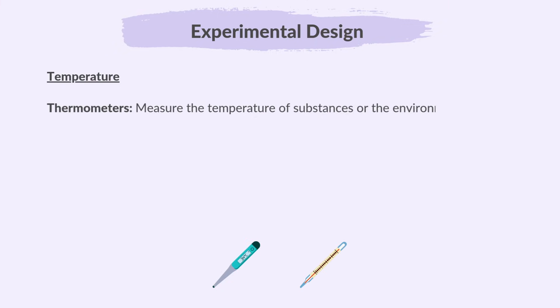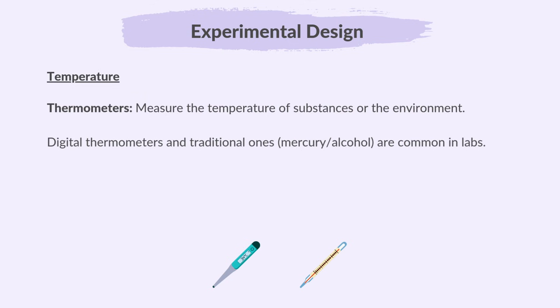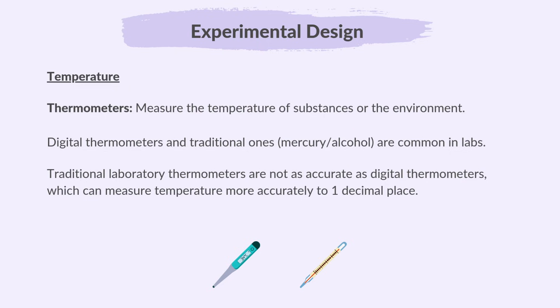Thermometers measure the temperature of substances or the environment. Digital thermometers and traditional ones are common in labs. Traditional laboratory thermometers are not as accurate as digital thermometers, which can measure temperature more accurately to one decimal place. Temperature is measured in degrees Celsius.